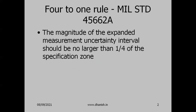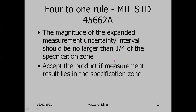The rule states that the expanded measurement uncertainty — the coverage interval — should not be larger than one-fourth of the specification zone. Accept the product if the measurement result (the average) lies within the specification zone; otherwise reject it.